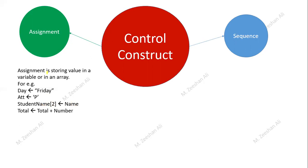During assignment you can directly assign values as in those examples. Secondly, you can store a value from one variable to another. You can also store a value after performing a calculation. In the fourth example, 'total ← total + number' means whatever the previous value of total was, the value of number is added to it and stored back in total — the total is incremented by the value of number.